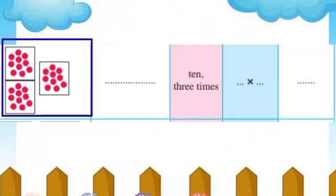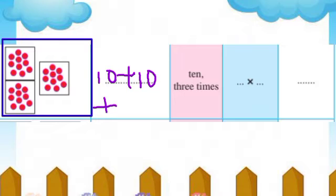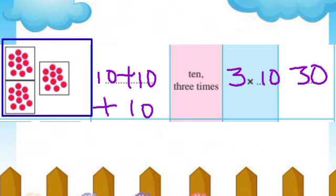See the next picture — here are some dots. Let's count: there are 10 dots in each box. Pratyek box madhe 10 dots aahet, aani ase 3 boxes aahet. Let's write as an addition: 10 plus 10 plus 10 — how many times? 10, three times. As a multiplication: 3 multiply by 10, or 10 multiply by 3. Total number of objects: 30.